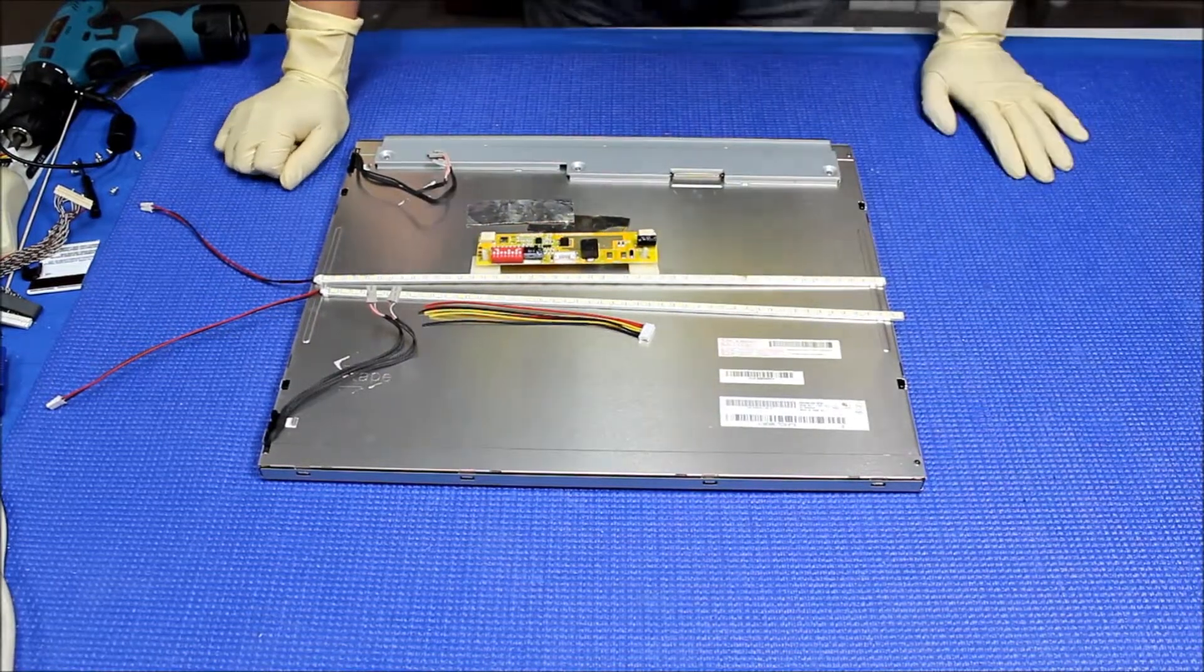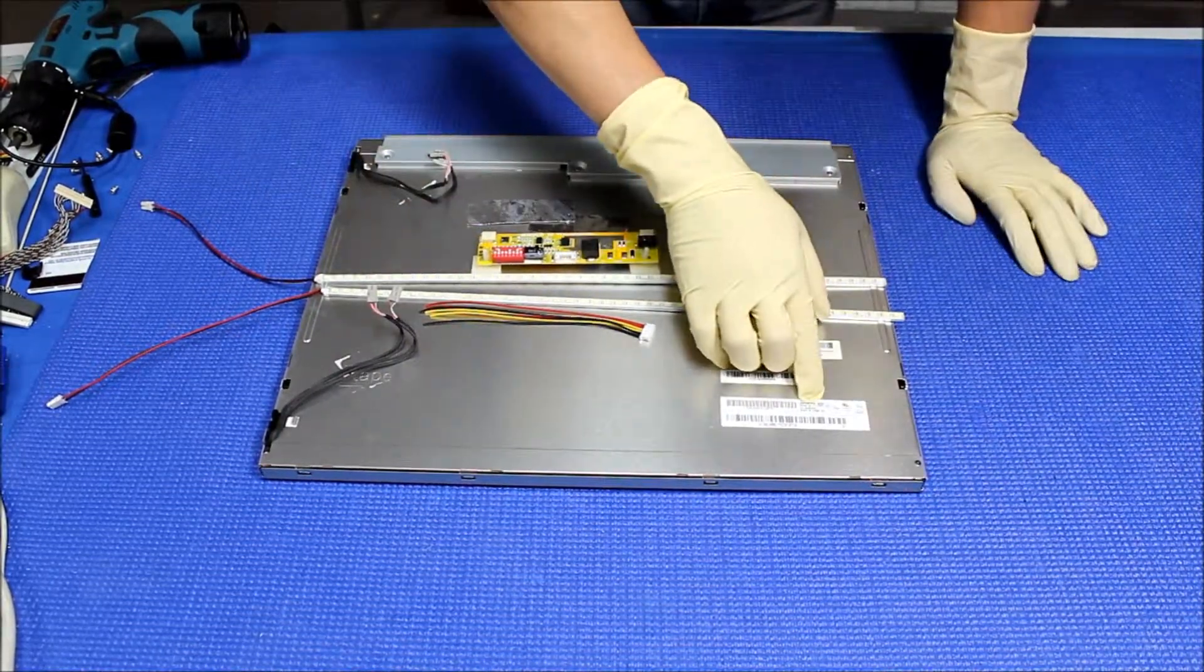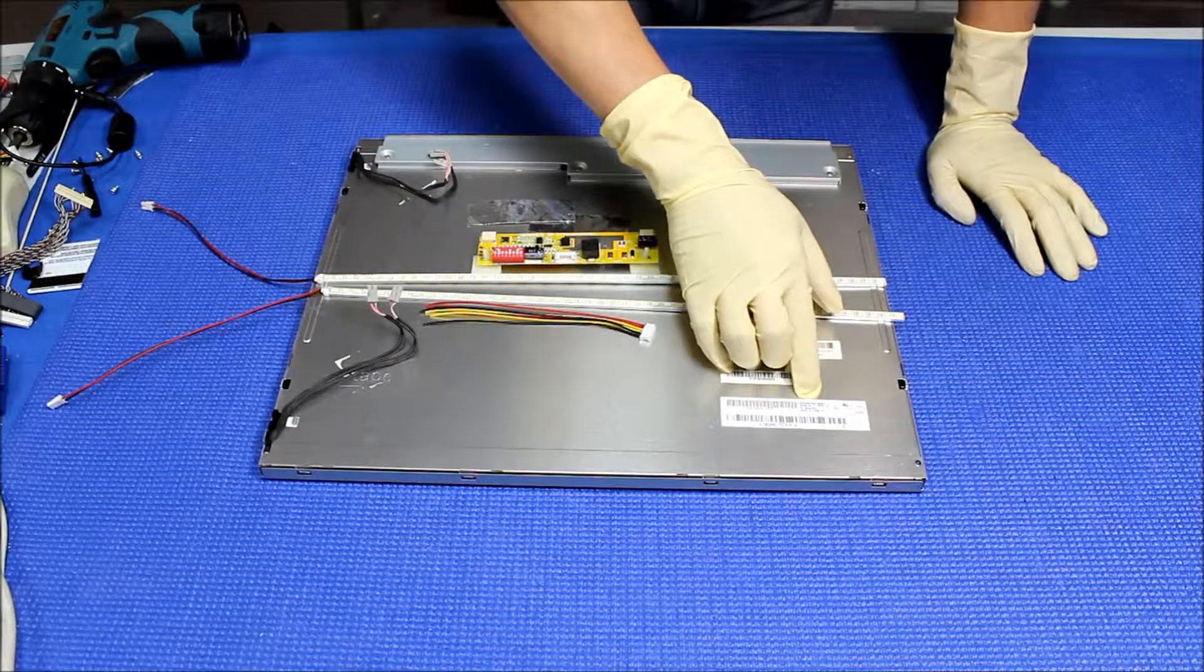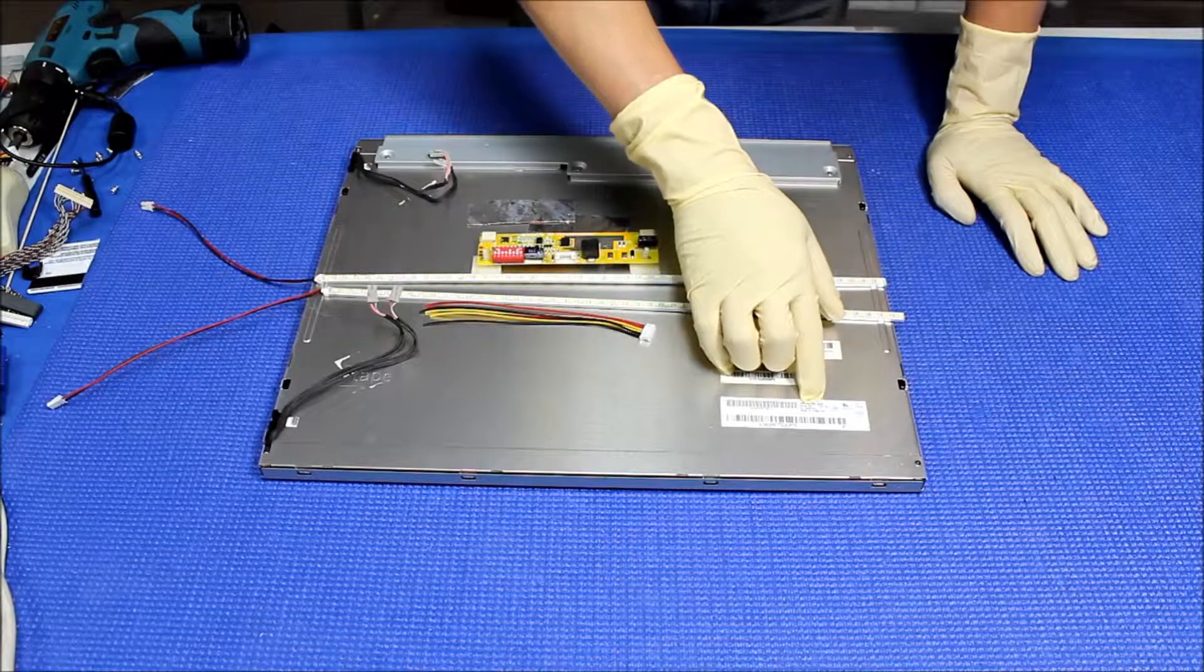This screen is made by AUOptronic. The screen part number is M190EG02.